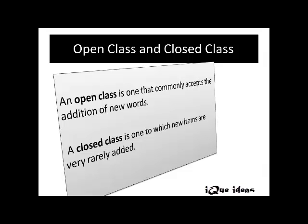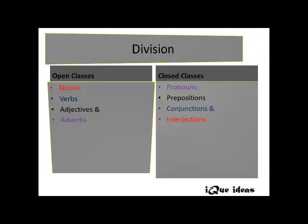A closed class, on the other hand, is one to which new items are very rarely added. Nouns, verbs, adjectives, and adverbs come under open classes, because new nouns, verbs, adjectives, or adverbs can be added. Pronouns, prepositions, conjunctions, and interjections come under closed classes, as new ones are rarely added.